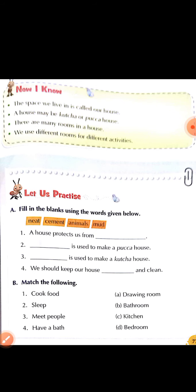Match the following. First: cook food — kitchen (answer C). Second: sleep — bedroom (answer D). Third: meet people — drawing room (answer A). Fourth: have a bath — bathroom. Kahaan pe hum food banate hai? Kitchen. Sleep ka match bedroom ke saath hai.